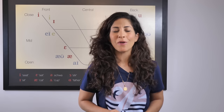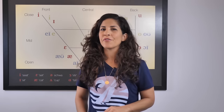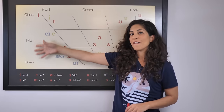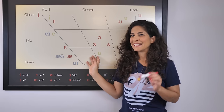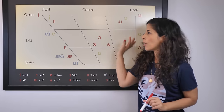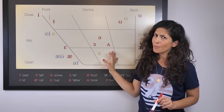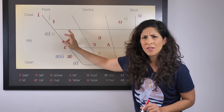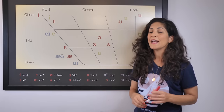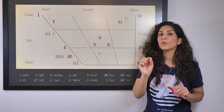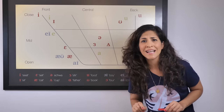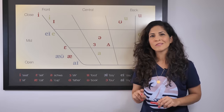Hey there, it's Hadar and this is The Accent's Way. Today I have a different lesson for you because I have my magic marker in one hand and my vowel chart on the wall. We are going to talk about all the vowels of American English. I'm going to walk you through this vowel chart — all the strange and funny symbols and what they represent — and also teach you how to pronounce them and what challenges you might face as a non-native speaker. Let's begin.